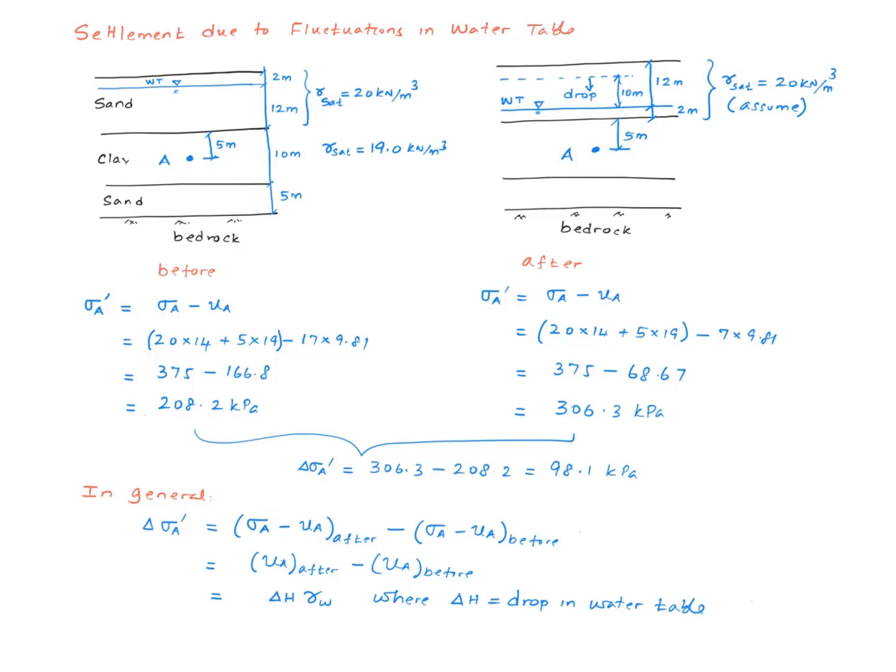But the total vertical stress remains the same because the density of the material above the clay layer remains saturated due to capillary action. And therefore, the total vertical stress does not change. So you can cancel these two. And the equation simplifies to the differences in the pore water pressure. The differences in the pore water pressure equals to delta H multiplied by gamma W, where delta H is the drop in the water table.